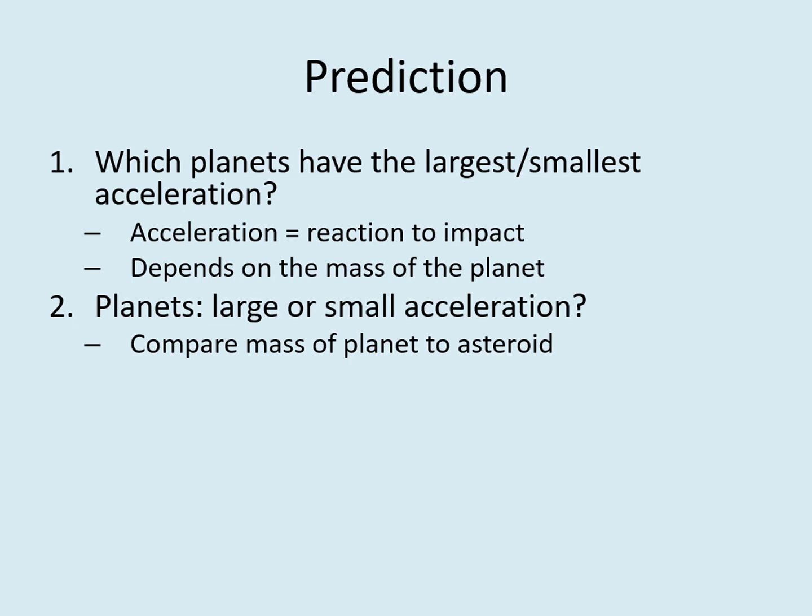In general, planets are much larger than asteroids. For example, the Earth is around 10 to the 10th, or 10 billion times bigger than this asteroid. A collision with that big of a mass ratio is sort of like a fly hitting the windshield of a car, with the asteroid being like the fly and the planet being like the car.